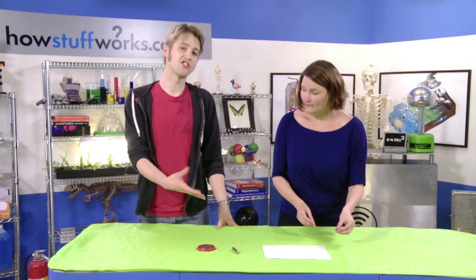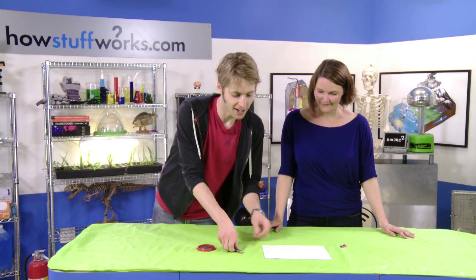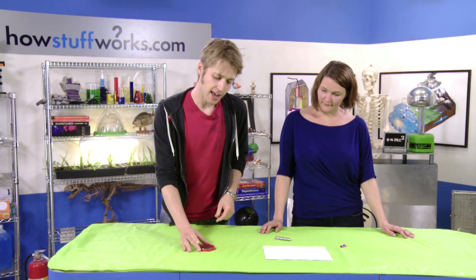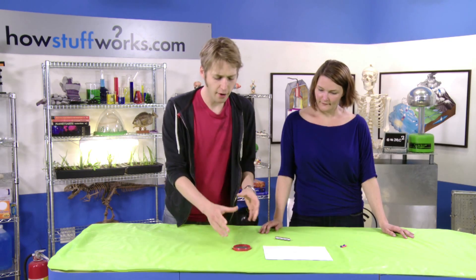Wouldn't it be cool if we could see that magnetic field? Well, there is a way and all you're gonna need is a magnet, sheet of paper, and some iron filings. Now iron filings are basically little bitty pieces of iron and you can buy them just like this.